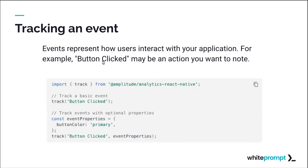Tracking events is really easy. You need to define all the events you want to track, which depends on the app, the goals, and what you want to know about what the user is doing. This is an example of tracking a button click — you assign a title to that event and can also assign properties to it.